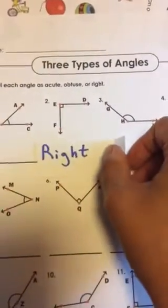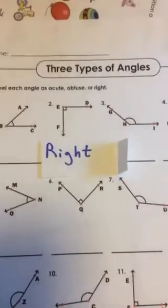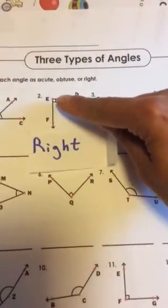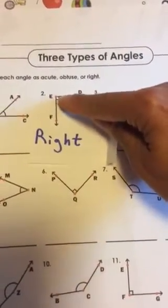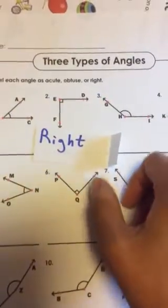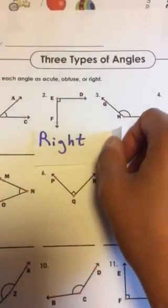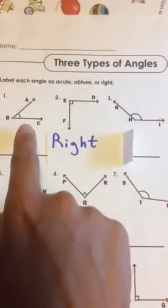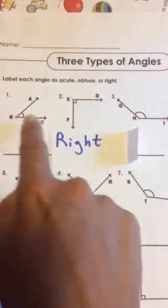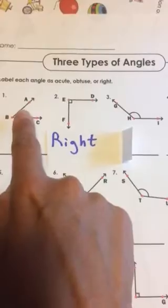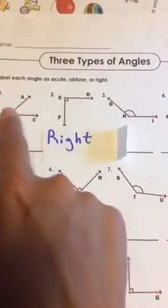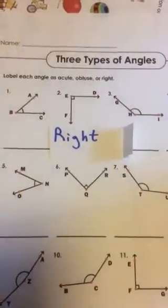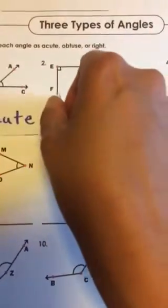So this one is the right angle. Notice how it has the sharp corner and the little square — that's how we know this one is a right angle. Now let's look at this one. This one is much smaller. You see how it could even fit inside the right angle? This one is much smaller, so it is acute.